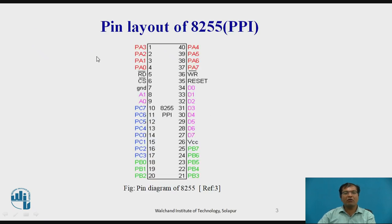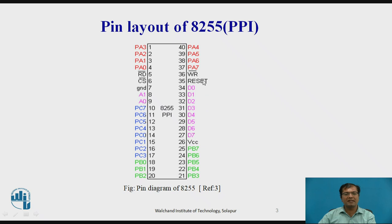Let us see the pin layout of 8255. This is a 40-pin IC, which has 8-bit port A (PA0 to PA7), then port B (PB0 to PB7), and port C (PC0 to PC7). Apart from this, it has read-write pin, chip-select pin, ground and VCC for power supply, and a reset pin. In total, it has 40 pins.